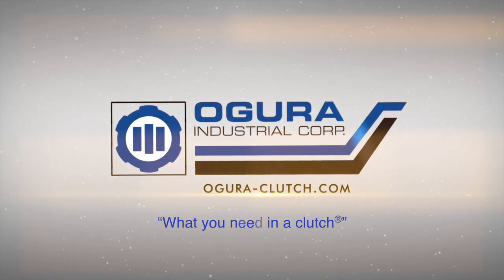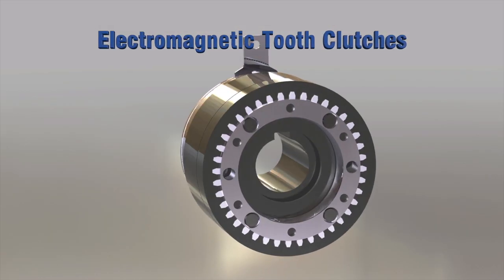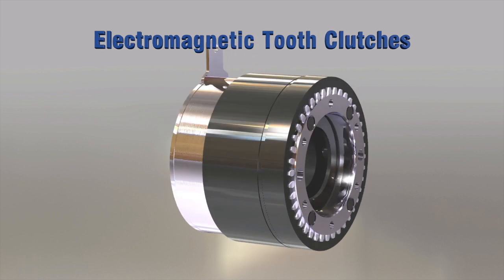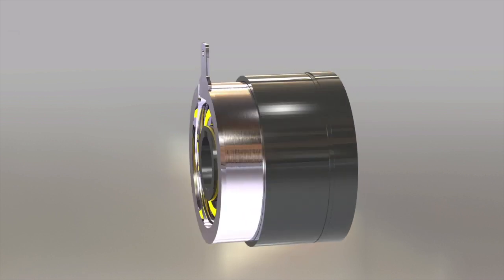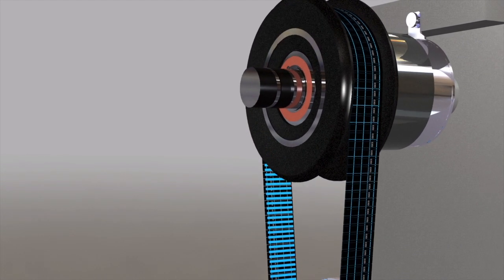What do you need in a clutch? Electromagnetic tooth clutches. Electromagnetic tooth clutches offer the greatest torque to size ratio.